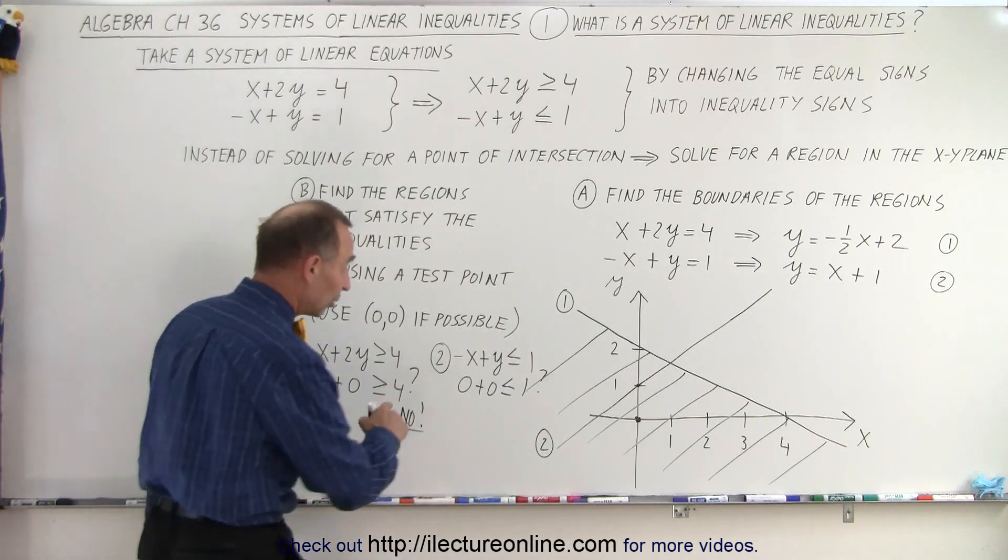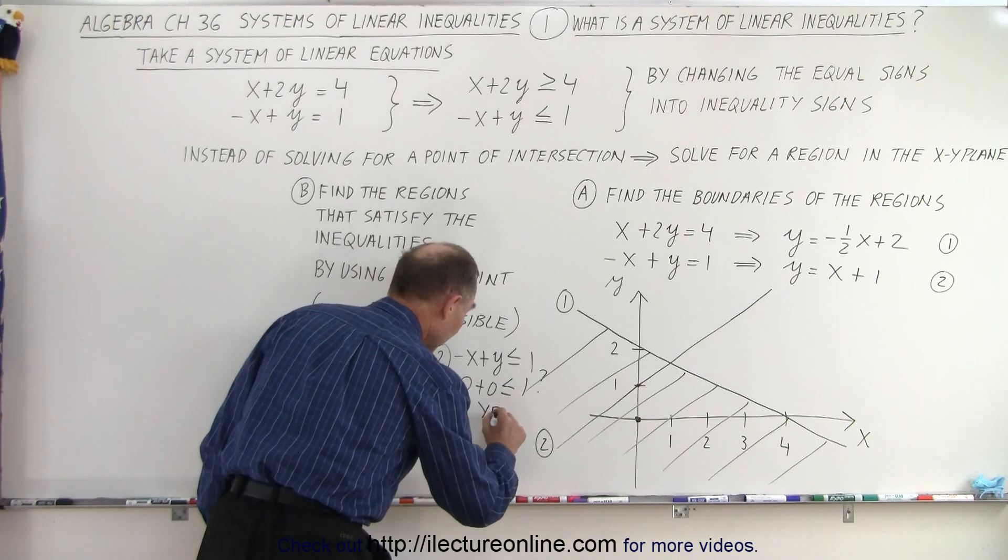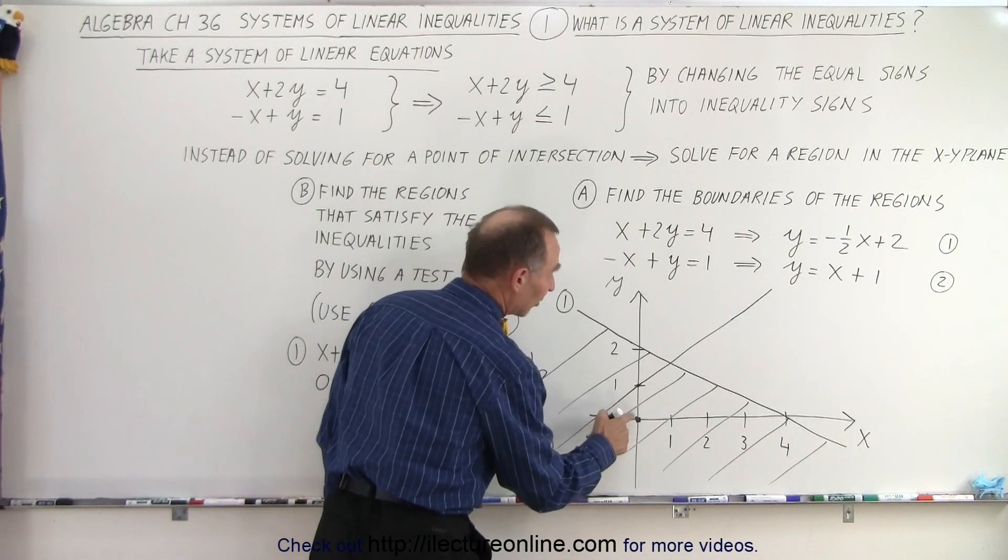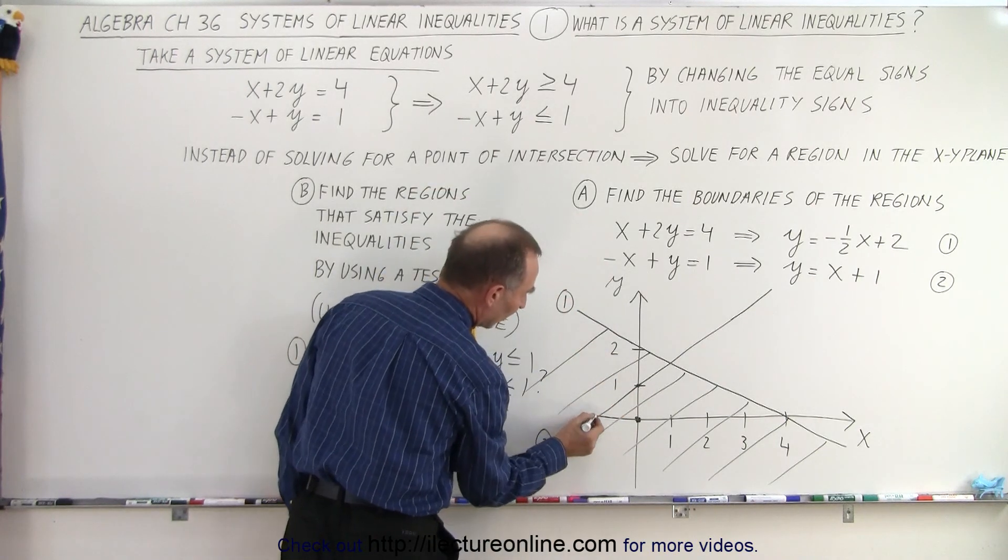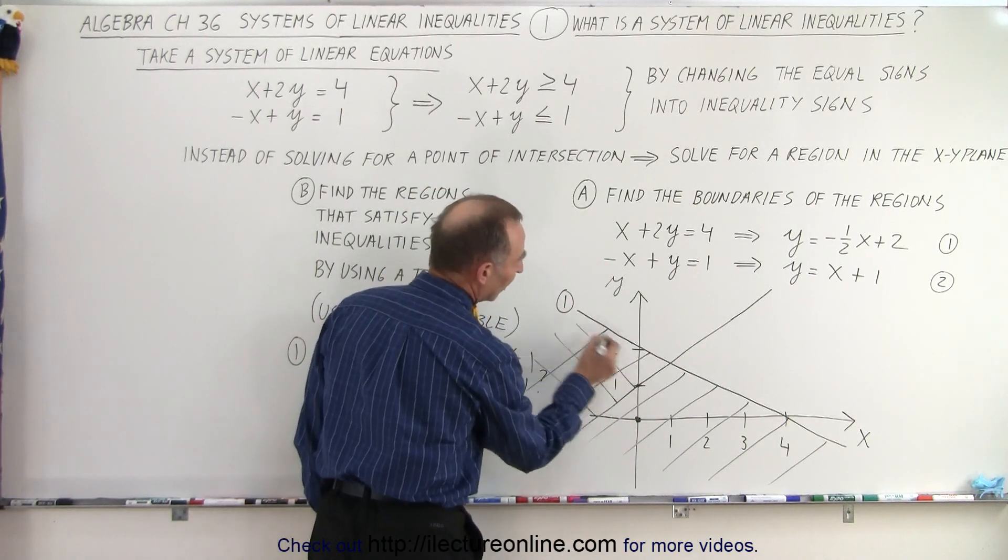In this case, the answer is yes. 0 is less than 1, which means that the point lies on the correct side of this line. That means the other side is the side I don't want. So I'm going to scratch out the other side of that line.